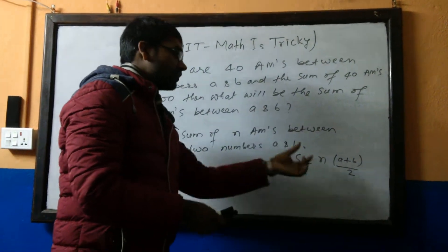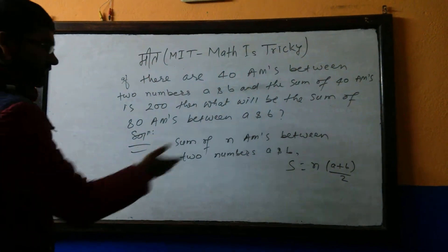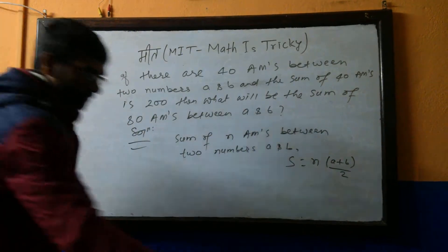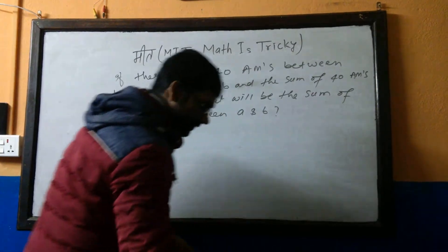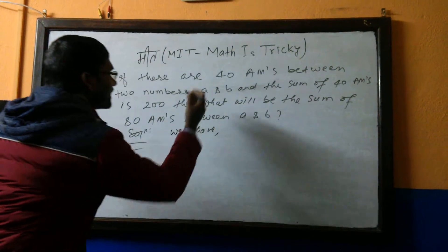Sum of the AMs will be, for n it will be n(a + b)/2. If we know this formula, simply we can solve this problem. So let me solve this using this formula. So now what we have? We can write here, we have, now using the same formula we can write here: